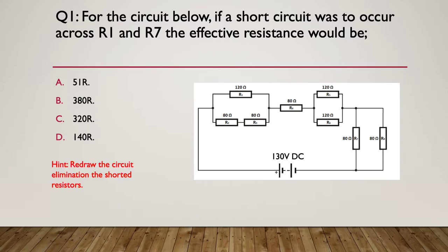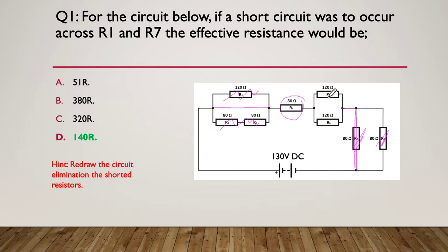Hint: redraw the circuit, eliminate the short-circuited resistors, and work from there. The answer is 140 ohms. If you short circuit R1, you get a short circuit straight through there, which eliminates those resistors. A short circuit across R7 eliminates R7 and that one as well. We're simply left with 80 ohms and the two 120s in parallel — so that's 60 plus 80, giving us 140 ohms.